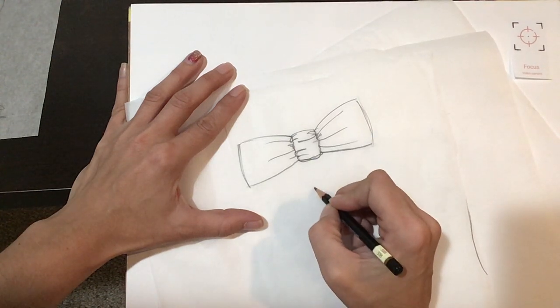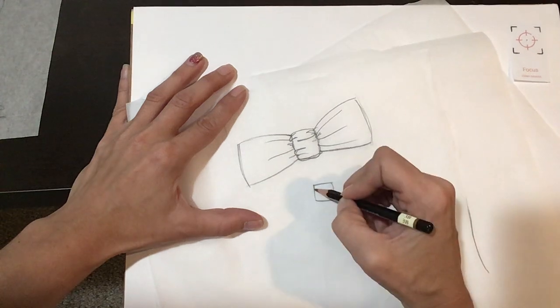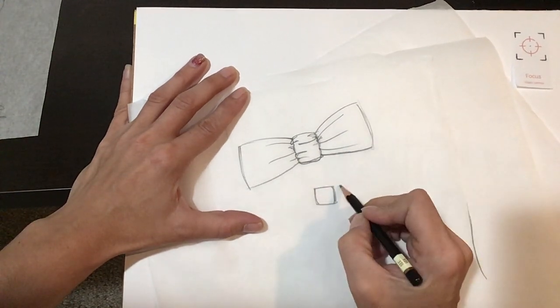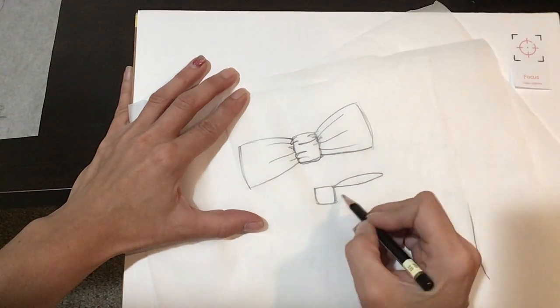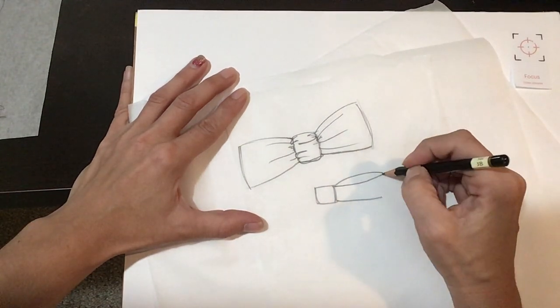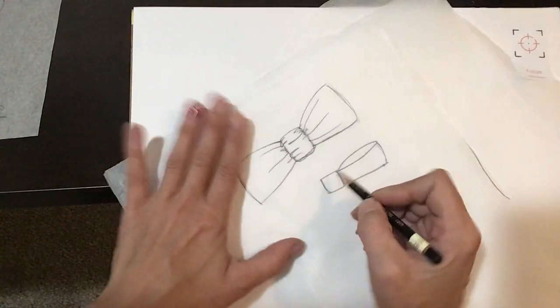And then we can also do things like, I'm gonna have to draw another one for this, but let's say if we're kind of looking down on it, so if it's on the bottom of the dress we're gonna see into the bow on the top. And so this would be a droopy bow also, right?